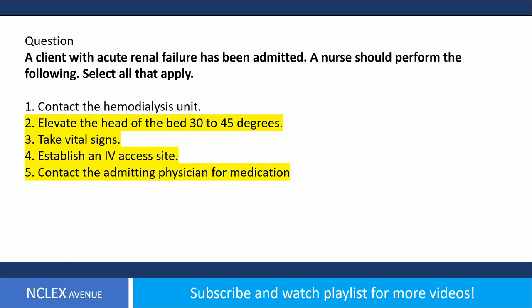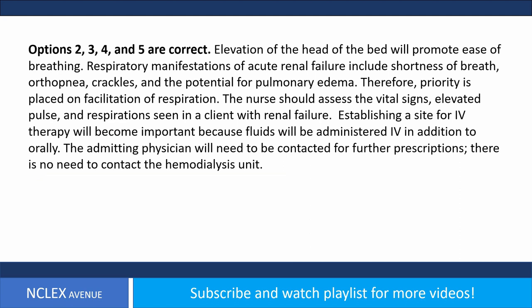Answer. Options 2, 3, 4, and 5 are correct. Elevation of the head of the bed will promote ease of breathing. Respiratory manifestations of acute renal failure include shortness of breath, orthopnea, crackles, and potential for pulmonary edema. The nurse should assess vital signs — elevated pulse and respirations are seen in renal failure. Establishing IV access is important as fluids will be administered. The admitting physician must be contacted for further prescriptions. There is no need to contact the hemodialysis unit.